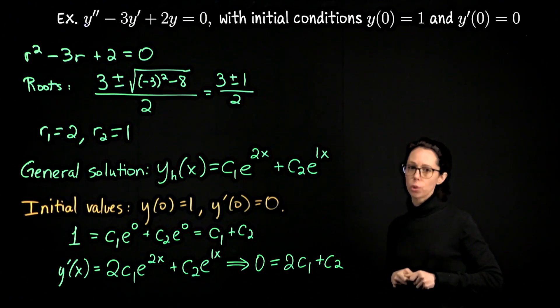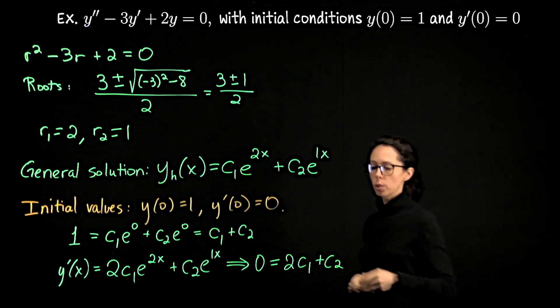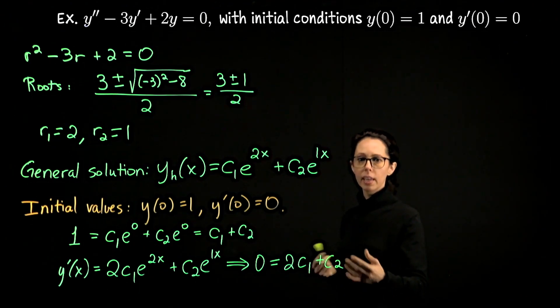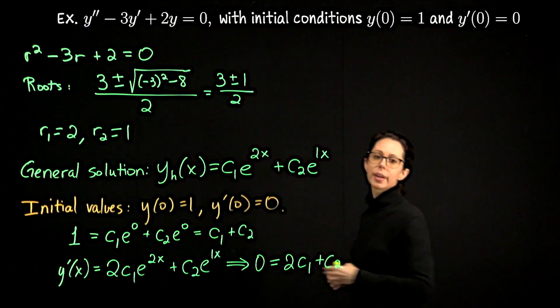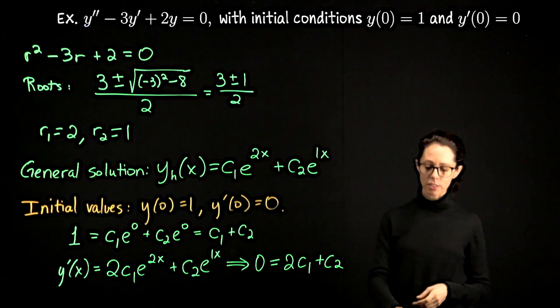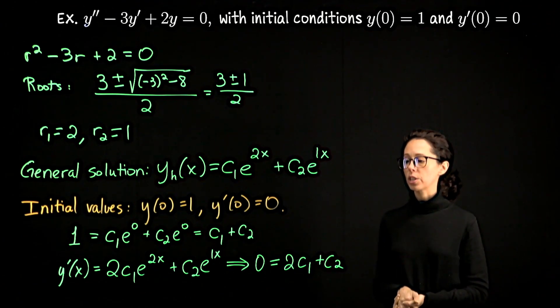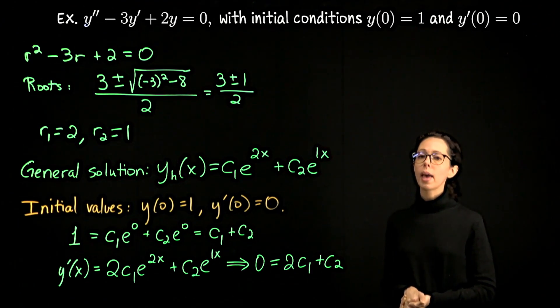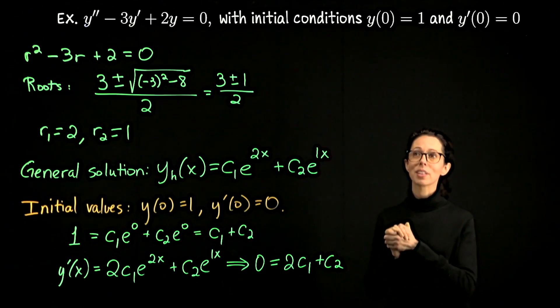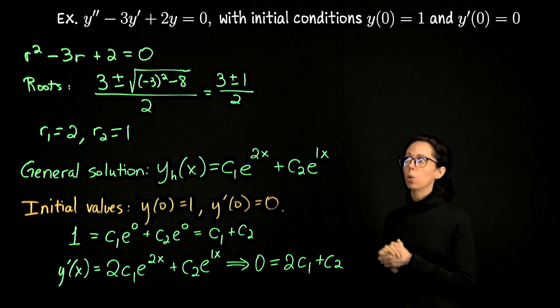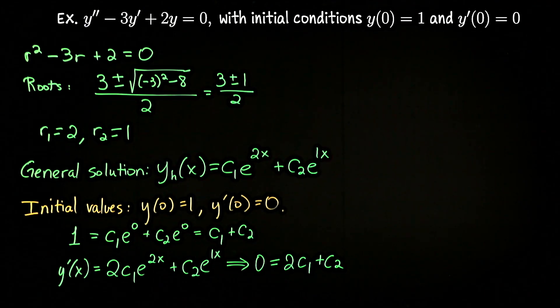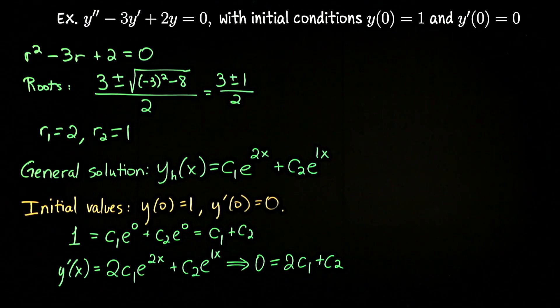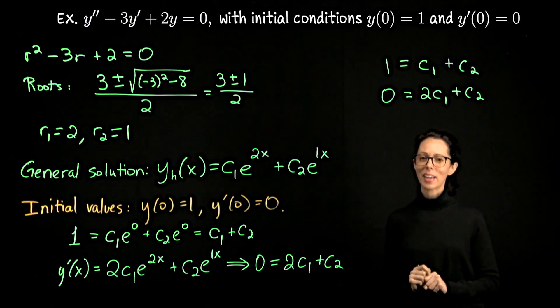What we now have is a system of two equations for two unknowns. So we're trying to find c1 and c2, given that c1 plus c2 equals 1 and 2c1 plus c2 equals 0. So if you'd like, you can also proceed to solve the system of equations for the unknown c1 and c2. And when you do that, you will have found the one solution y, which solves this initial value problem.